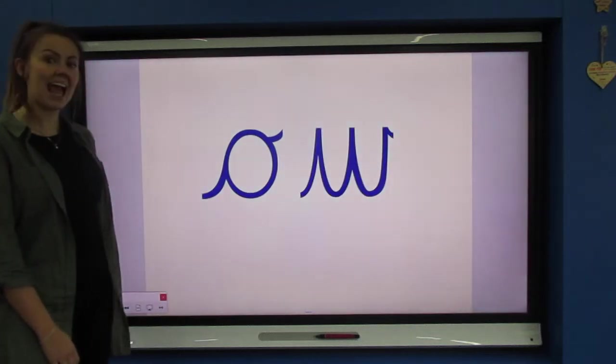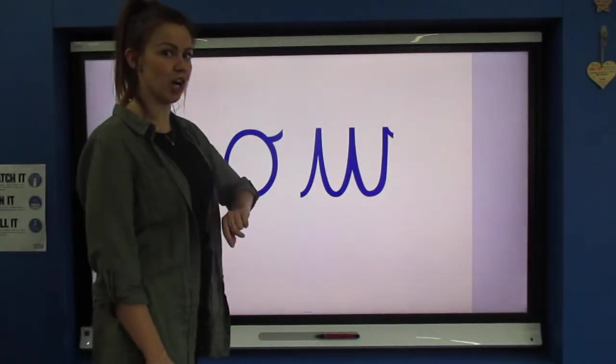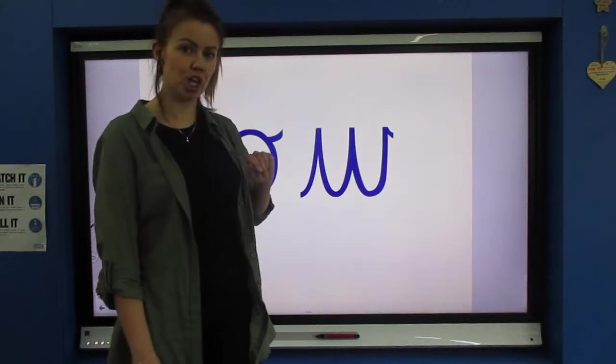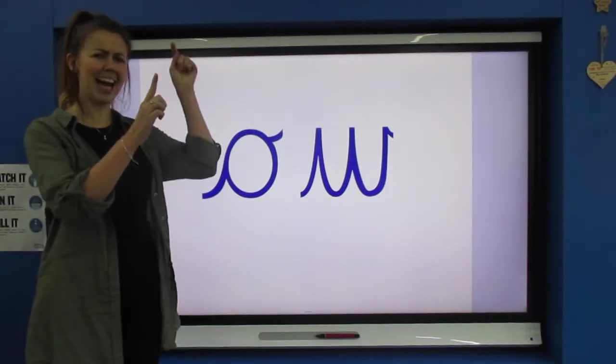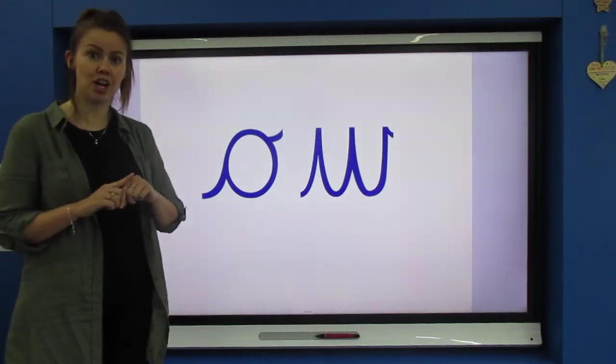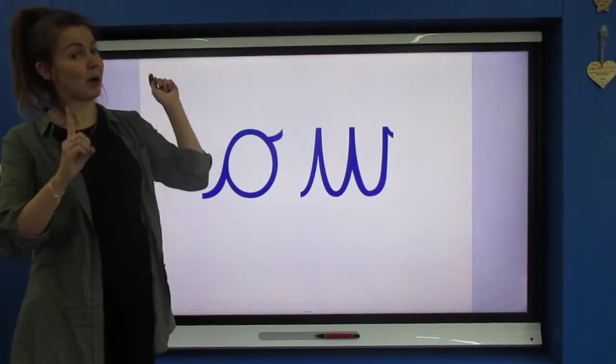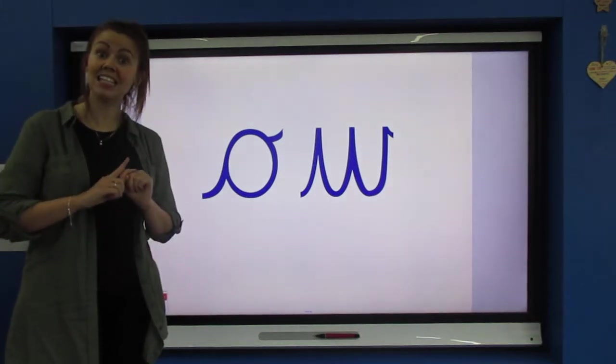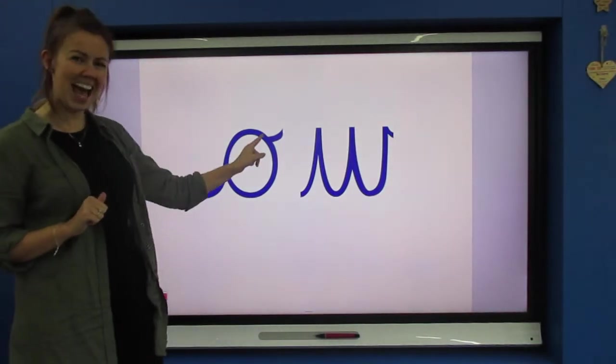And this is our new sound today. An R and a W, an O and a W, and when we put them together it makes the sound ow. Like if you prick your thumb with a needle and the song goes I've pricked my thumb with a needle ow ow ow and that's how it sounds ow.